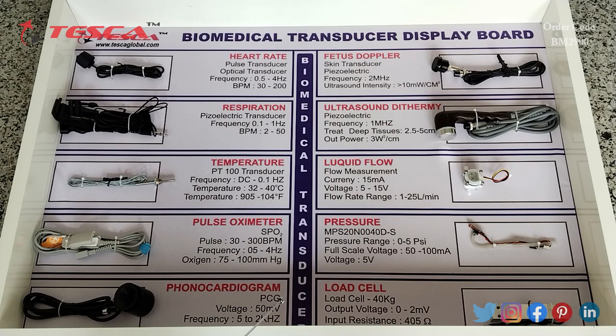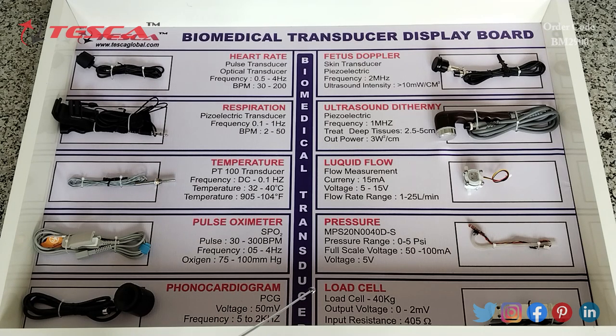Then this is the load cell and it has a capacity of 40 kg. Its output voltage is 0 to 2 mV and input resistance is 405 ohm.